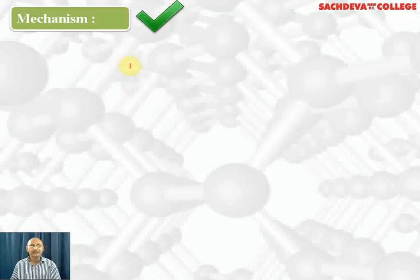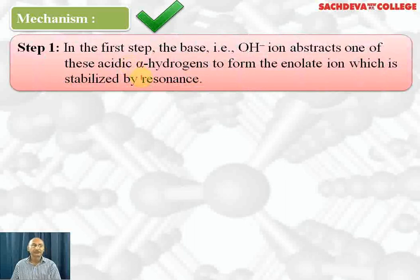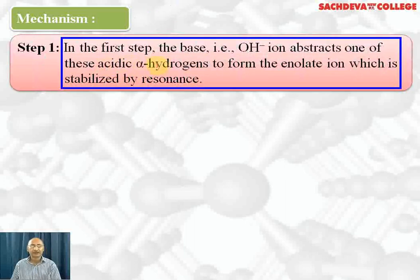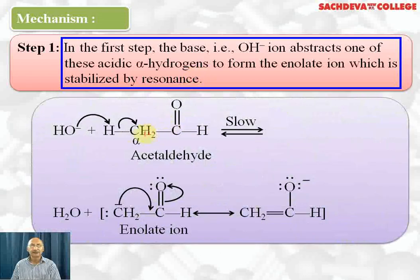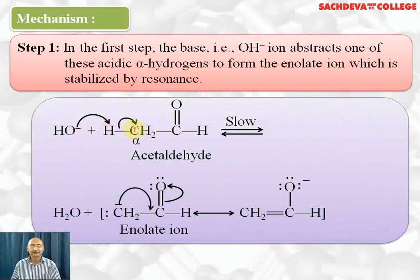Let's take up the mechanism of this reaction. In the first step, the base (OH⁻) abstracts one of the alpha hydrogens to form an enolate ion, which is stabilized by resonance. The OH⁻ takes up the alpha hydrogen, creating a carbanion — this is the carbanion (enolate ion) formed — plus water. This negative charge is stabilized by resonance as the electron pair shifts to oxygen.